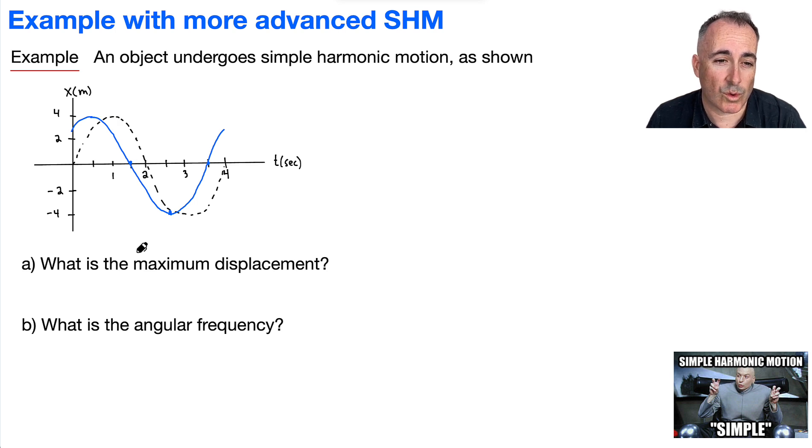So the first question is what's the maximum displacement? Well, what can we tell from this graph? We can tell the amplitude. You see that this distance from the center right here to the top? That right there we're going to call the amplitude. And what is the amplitude? Well, in this case, the amplitude is just going to be 4 meters. This is helpful because the maximum displacement is the amplitude, X0 equals 4. So we've got our first one already done. That was easy.